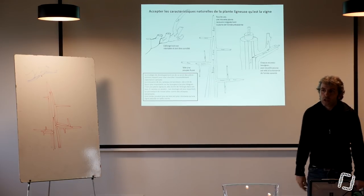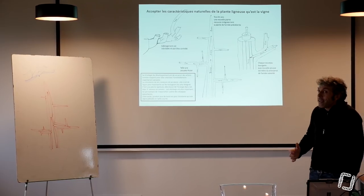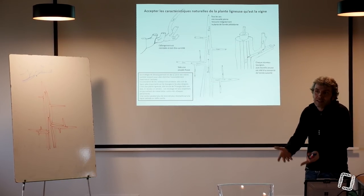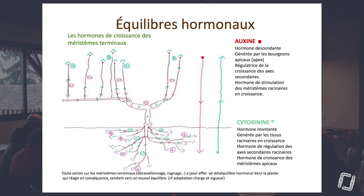Donc, c'est un empilement de couches. Hyper important à comprendre, parce qu'à chaque fois qu'on va intervenir et qu'on va couper la plante, on va rentrer dans ces couches-là. Cette diapo-là, c'est pour moi une des clés de la viticulture. C'est-à-dire qu'elle permet de comprendre qu'est-ce qui se passe dans notre plante quand on taille et pourquoi la plante réagit de cette manière-là le printemps suivant.